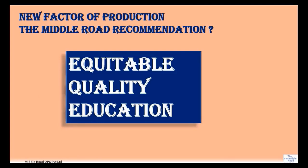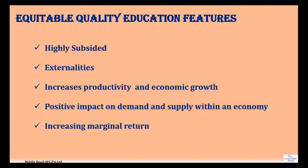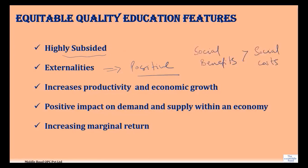This is a new thing which The Middle Road is proposing: a new factor of production — equitable quality education. Education has a huge positive externality, and positive externalities are heavily subsidized. Equitable quality education leads to an increase in productivity and economic growth. Research shows it leads to a higher amount of income in the labor market.